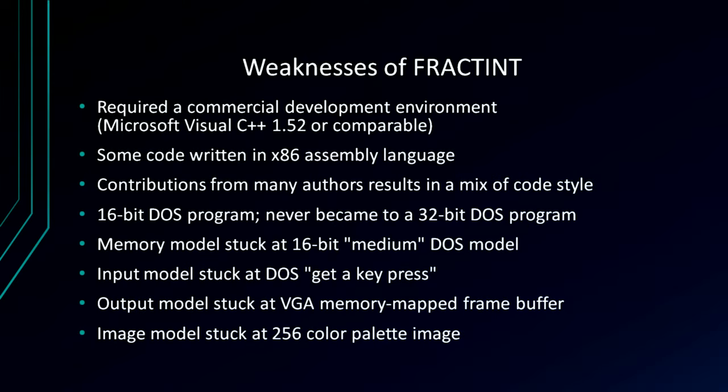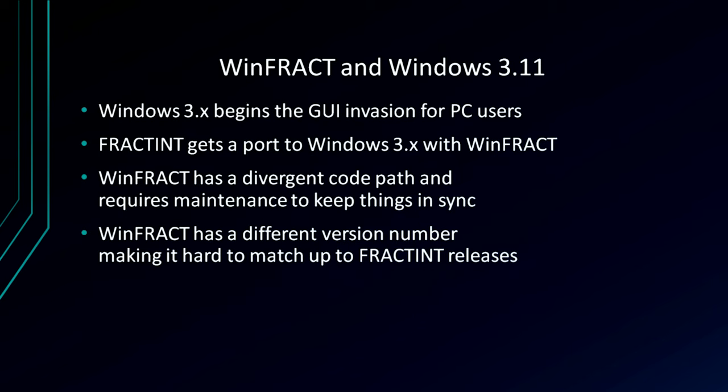The input model is stuck at DOS-style key polling, and the output model is locked into a VGA memory-mapped framebuffer with indexed color — stuck in 256-color mode, so it never got true color support. There were attempts to branch the code: WinFract was a Windows 3.1 fork, but it had a divergent code path and a different version numbering scheme, making it hard to know which version of WinFract corresponded to which version of FractInt, requiring extra maintenance to keep them in sync.